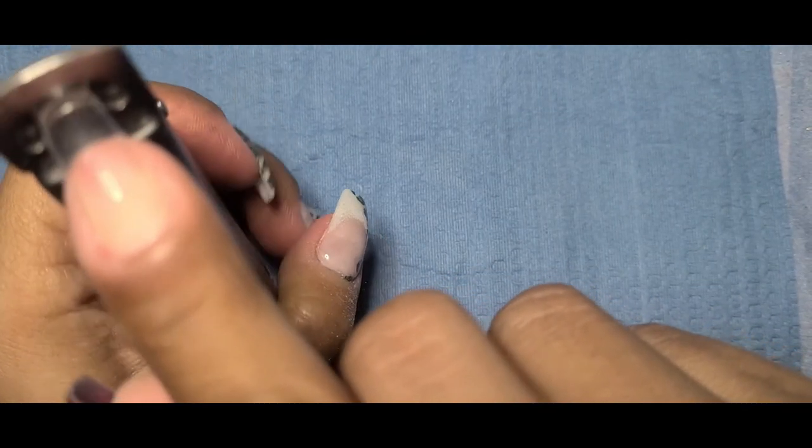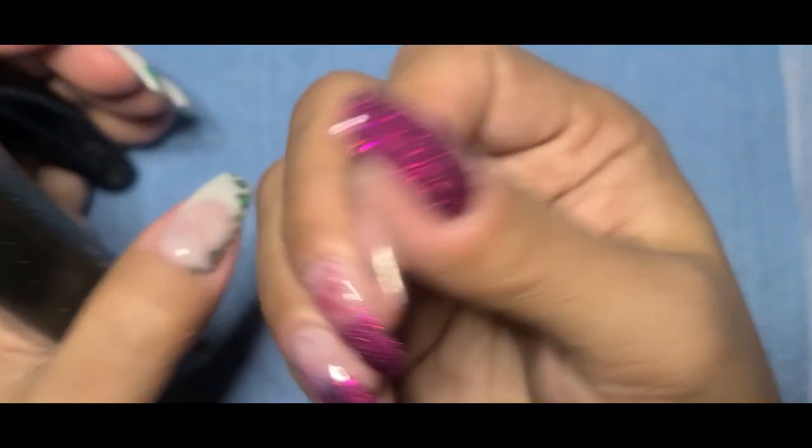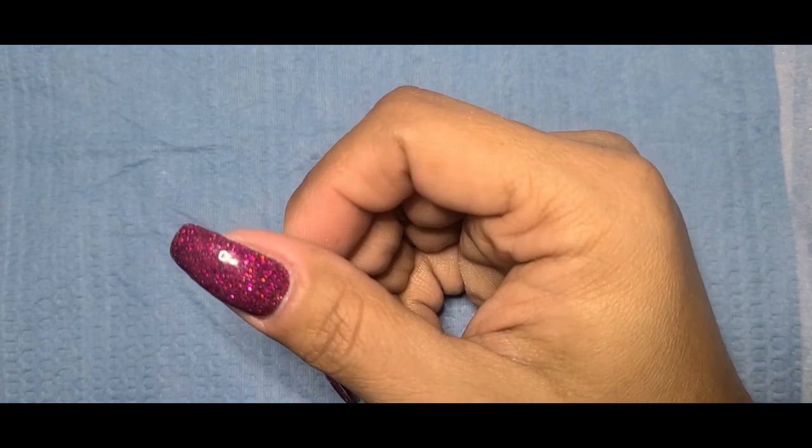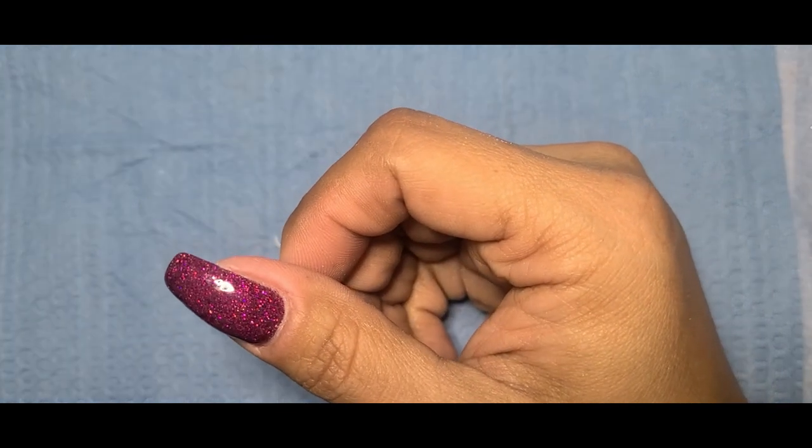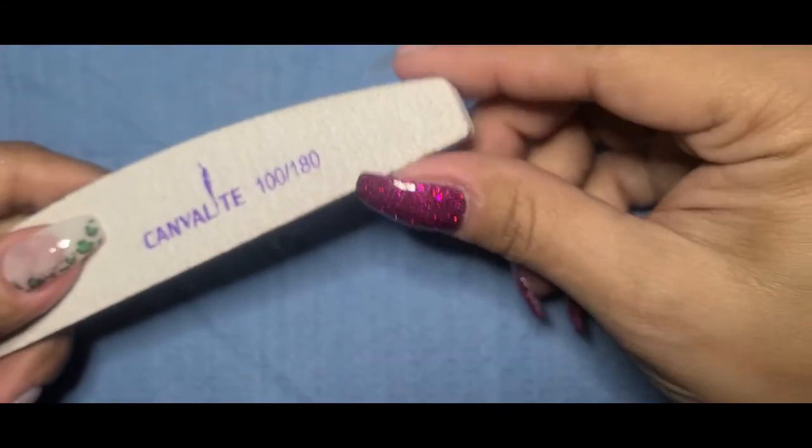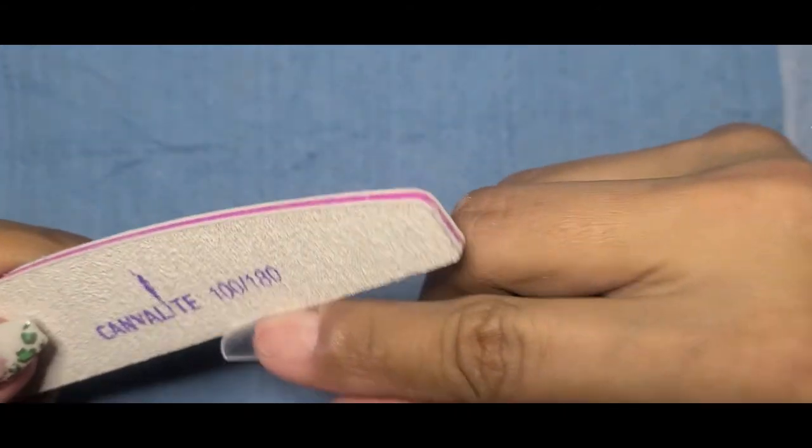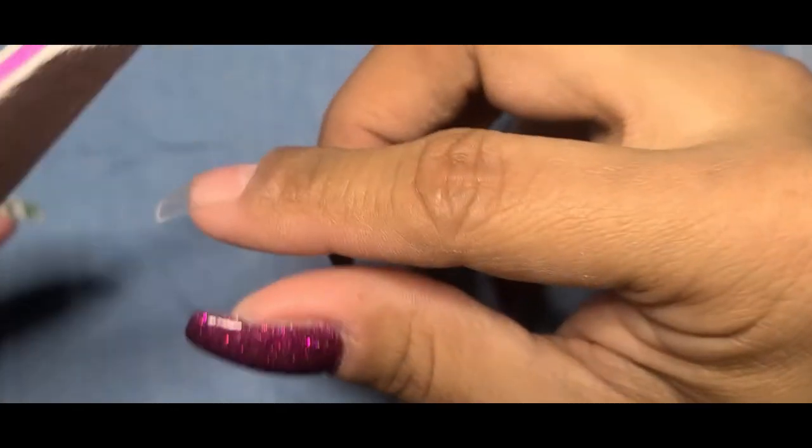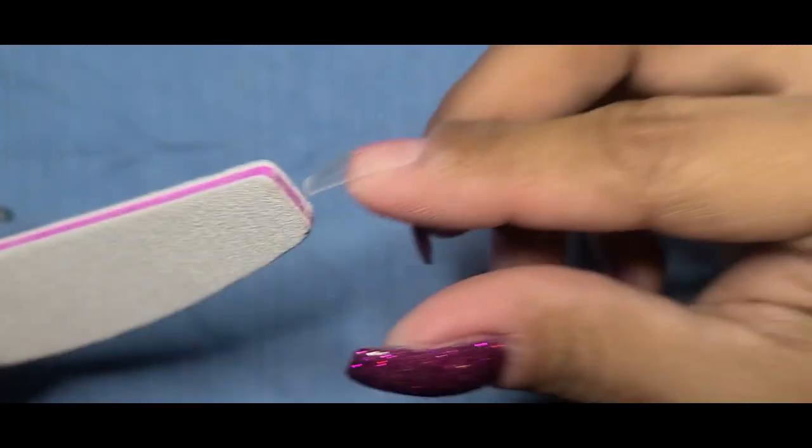Whenever you're working with tips, you do want to make sure that you exaggerate your shape because when applying dip products, they will add width to your nails. So you want to exaggerate your shape just a little bit so that after you dip, you file and buff and do that whole process, you'll end up with the result that you want, not with a wider version of it.